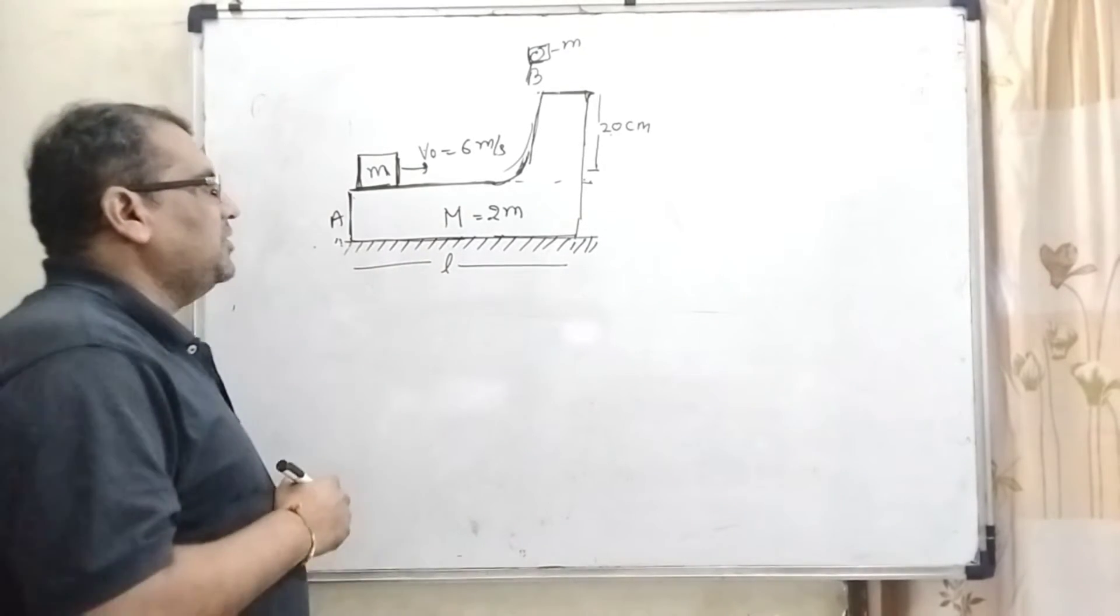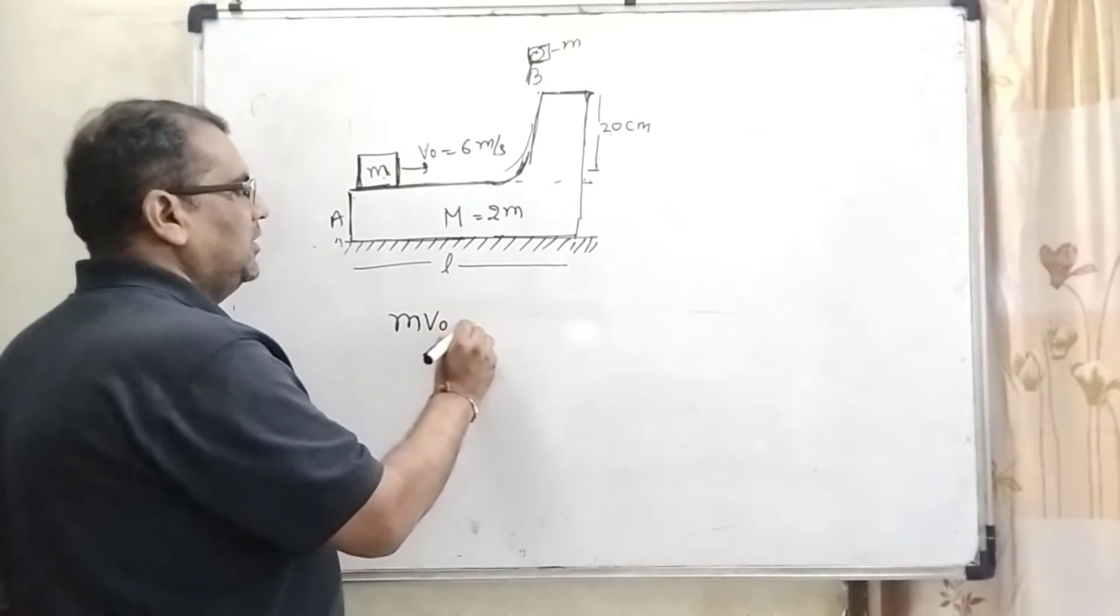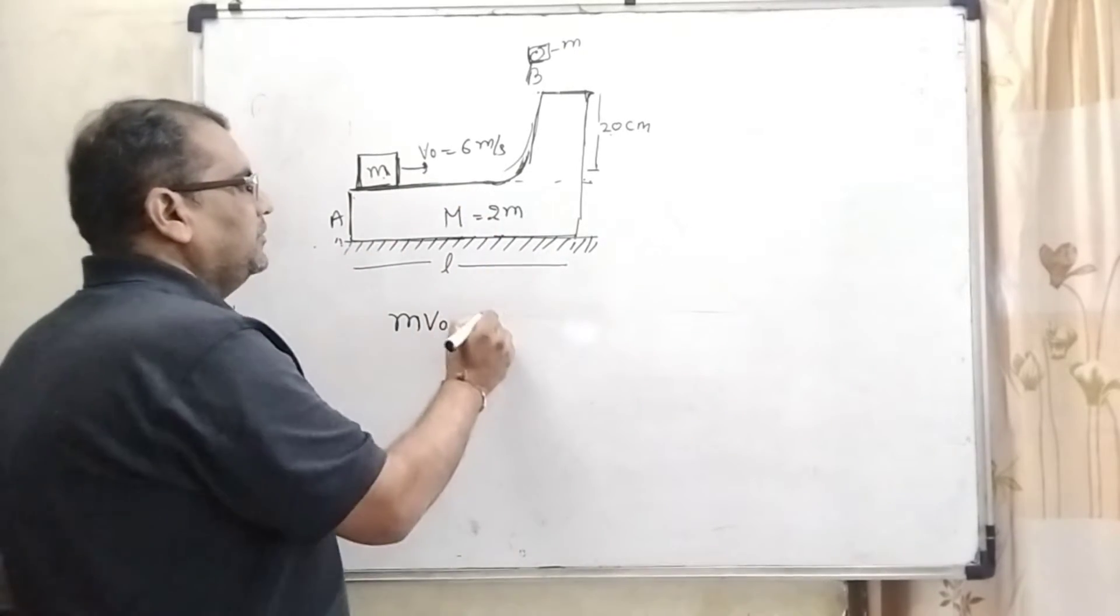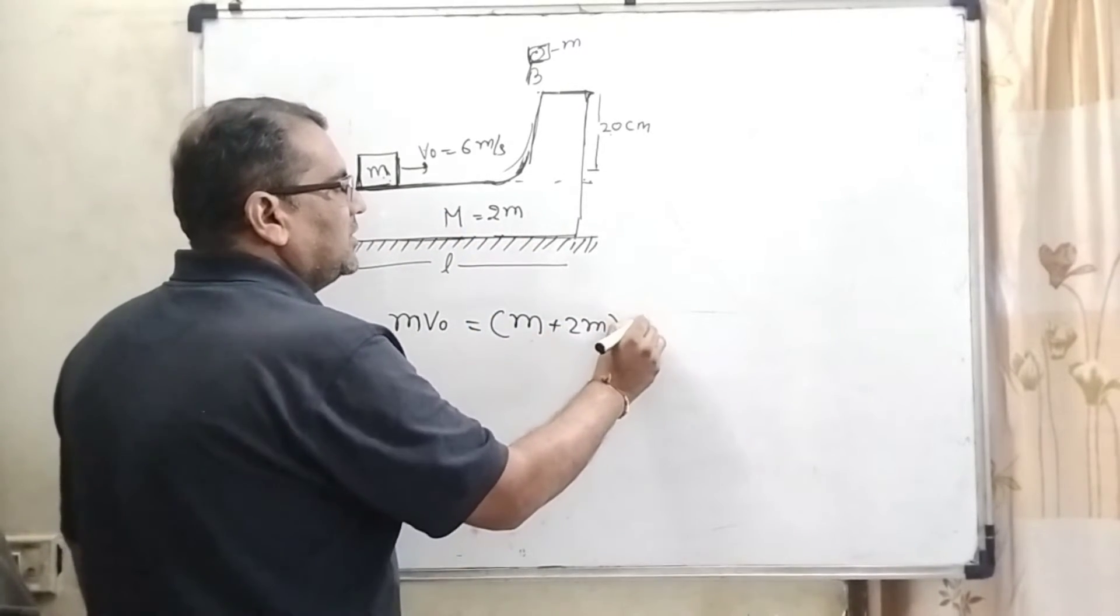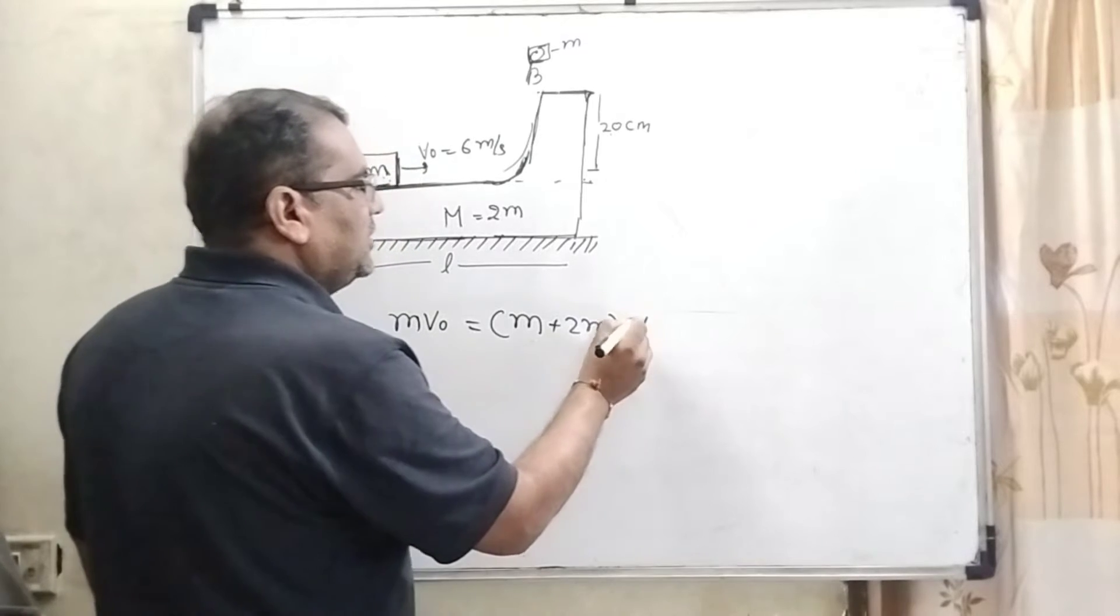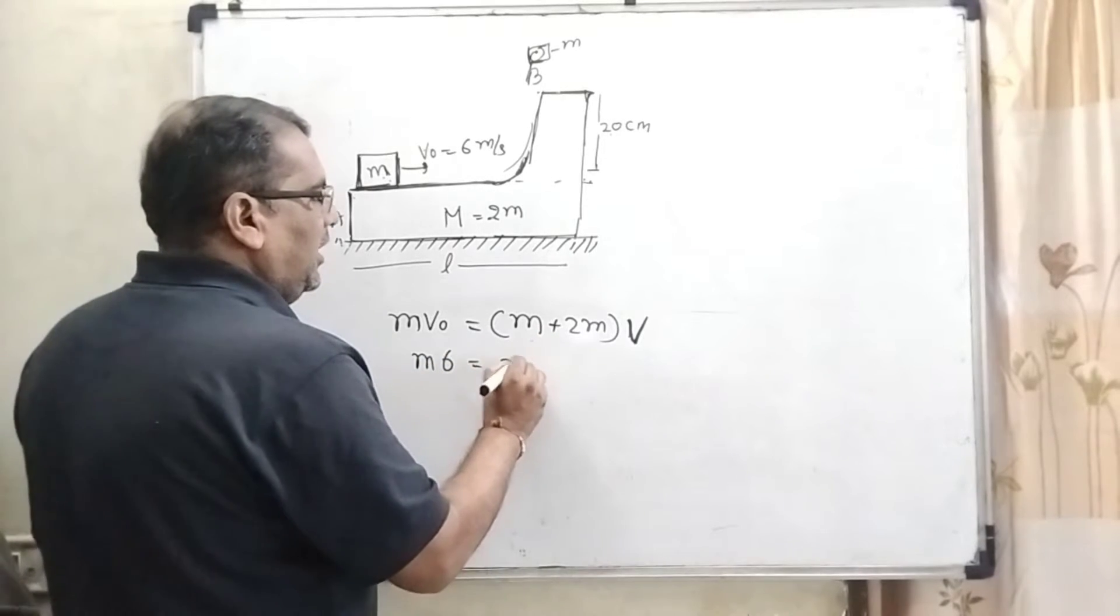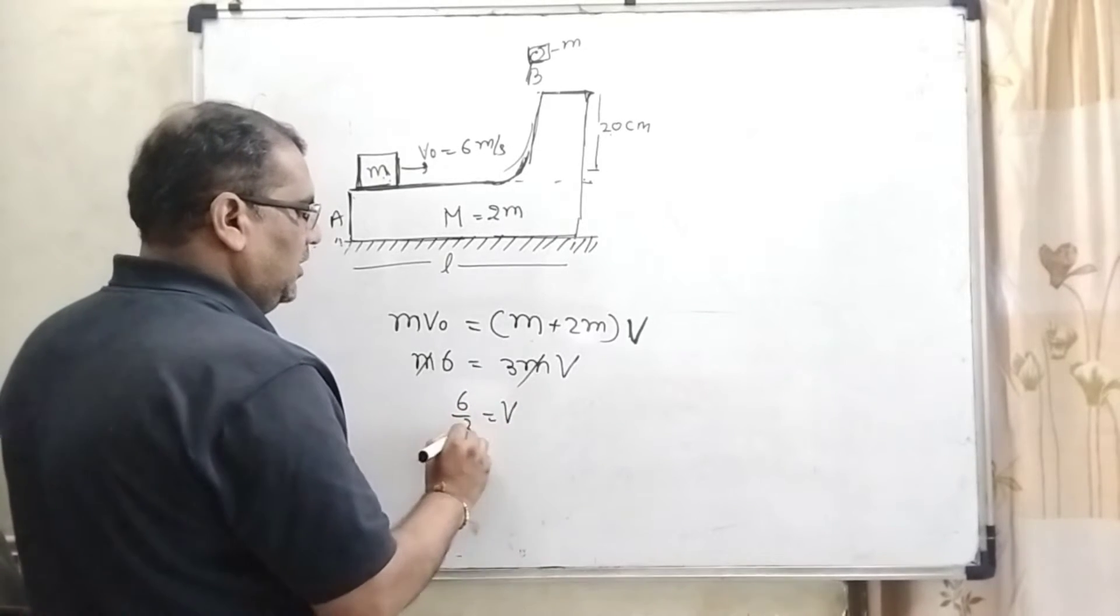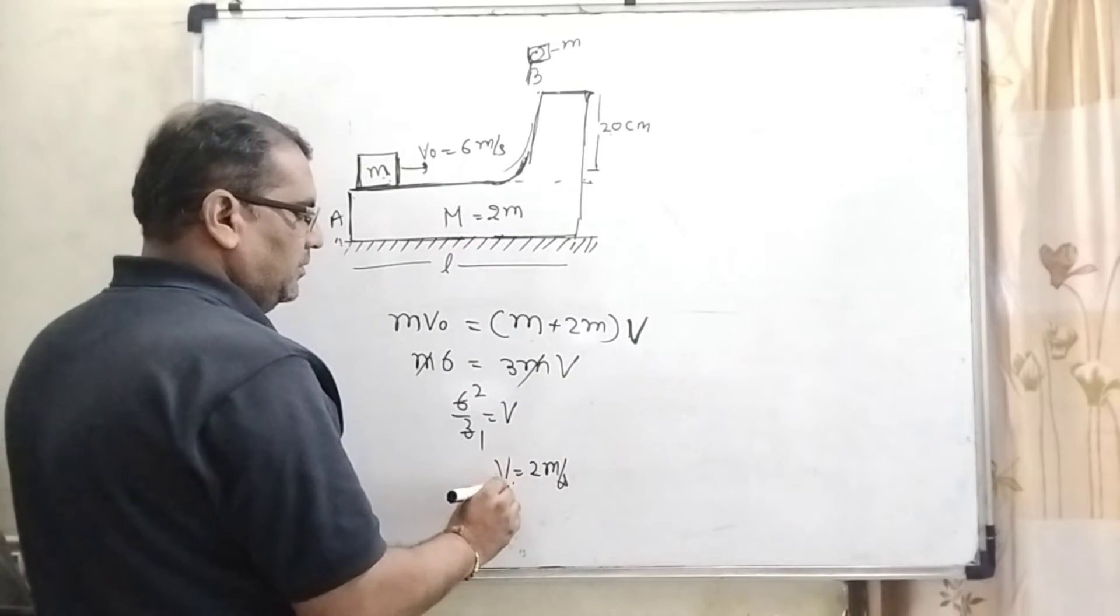Let us first we have to apply laws of conservation of momentum. First of all, we have to put M for the block M and its velocity is v0. And then it get the velocity and here the frictionless surface. Therefore, mass of the block and mass of the wedge cannot combine velocity because it is moving along with this block. Therefore, we have to calculate the velocity of v. So m times velocity is 6 equals 3m times v. This is cancelled out, 6 by 3 equal to v. So v equal to 2 meter per second. Here the velocity of this wedge.